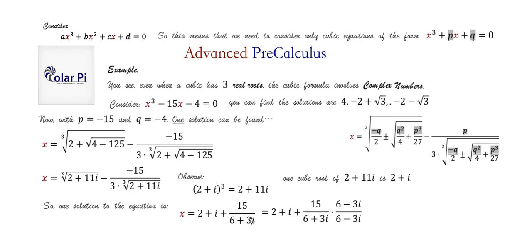After a little more simplifying — multiplying by the conjugate top and bottom — we get 4. There it is: one of the roots we stated from the beginning of this cubic is confirmed.